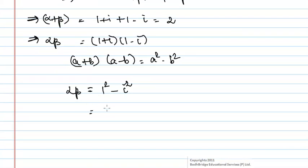We know that i² = -1. Therefore, 1² - (-1) = 1 + 1 = 2.